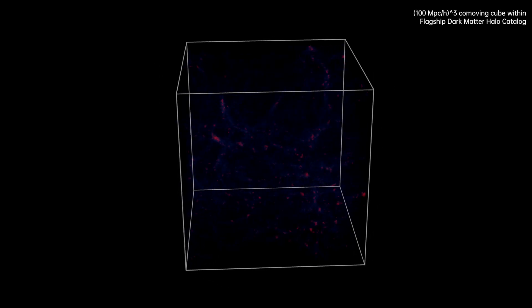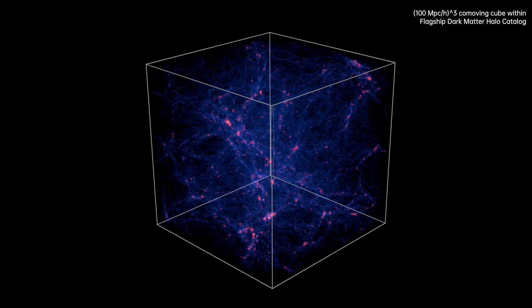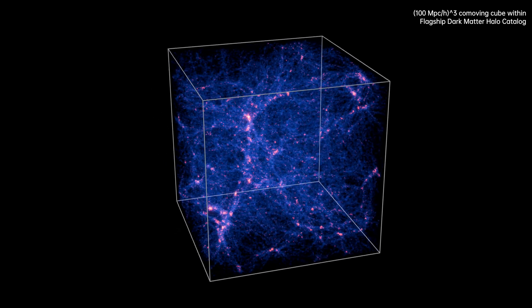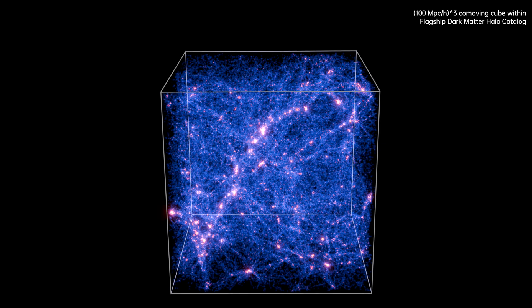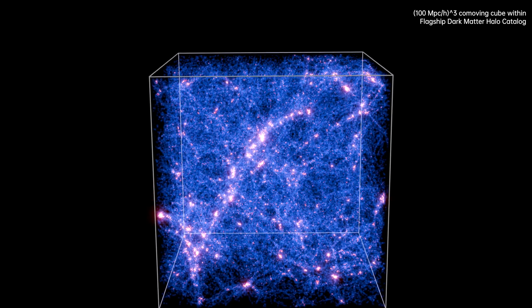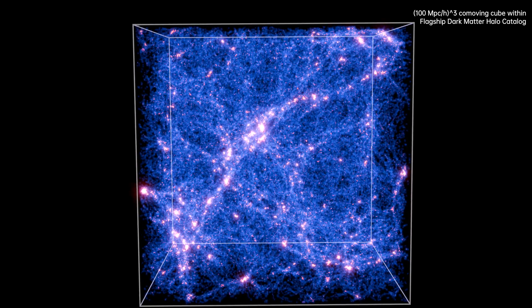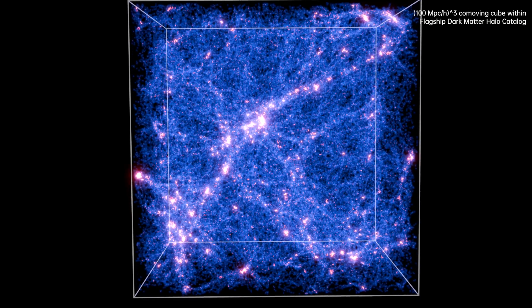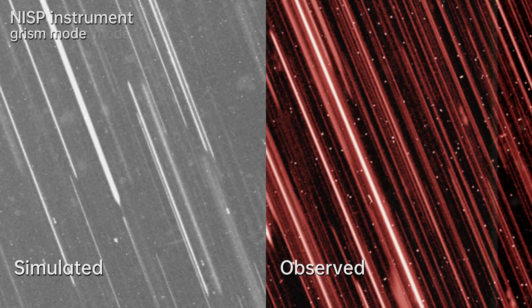However, in order to truly understand what Euclid sees, we must first simulate Euclid's universe. A flagship simulation is a state-of-the-art synthetic universe made using a supercomputer. From this simulation, software pipelines created by teams in the Euclid consortium can make observations that perfectly mimic what Euclid sees in the sky.